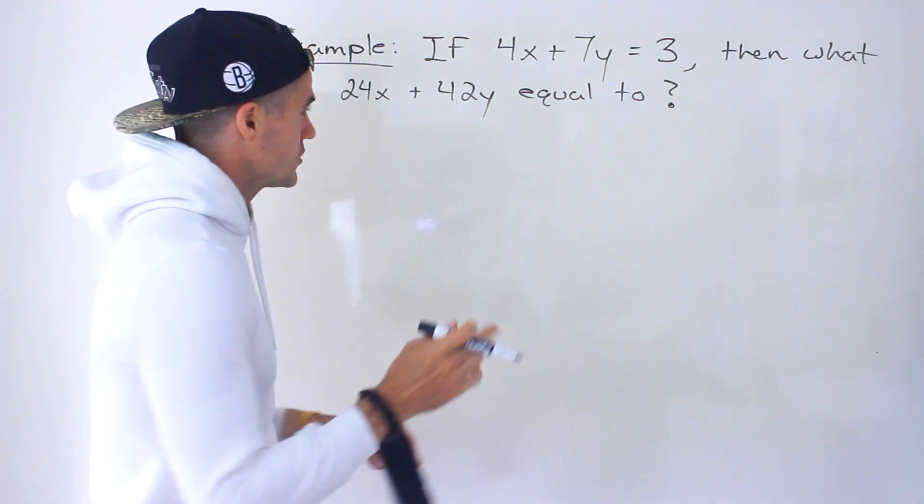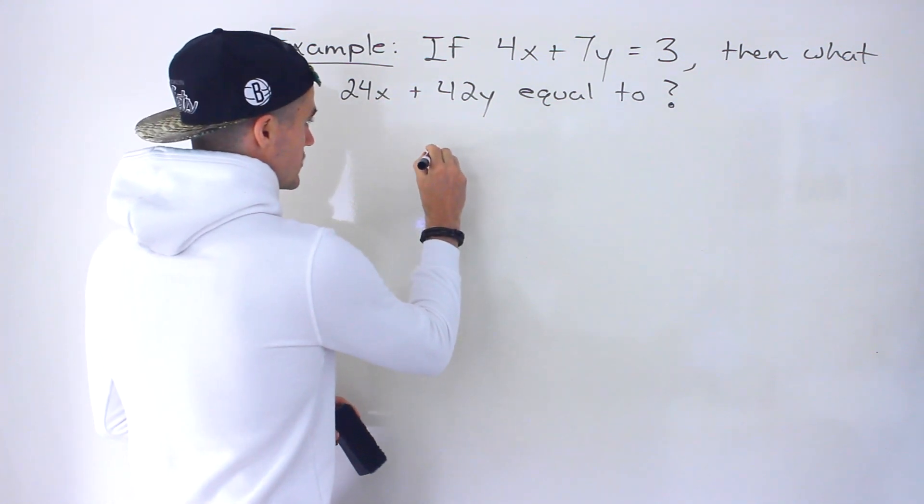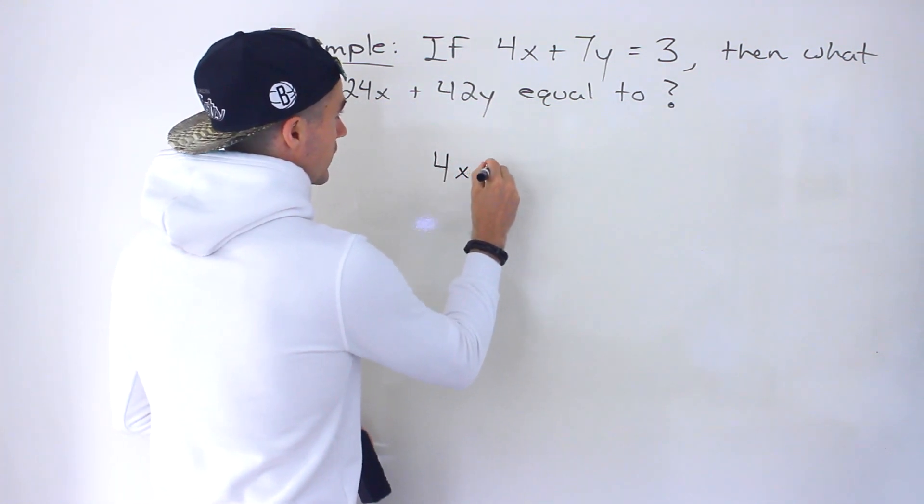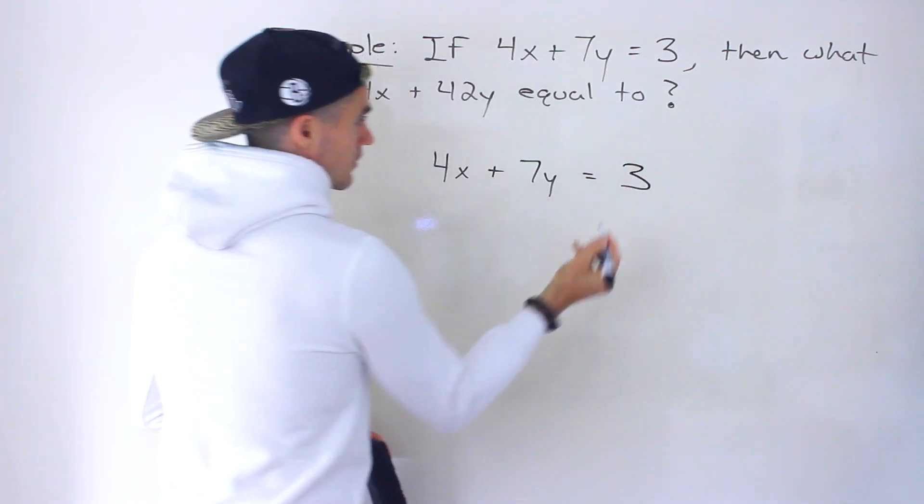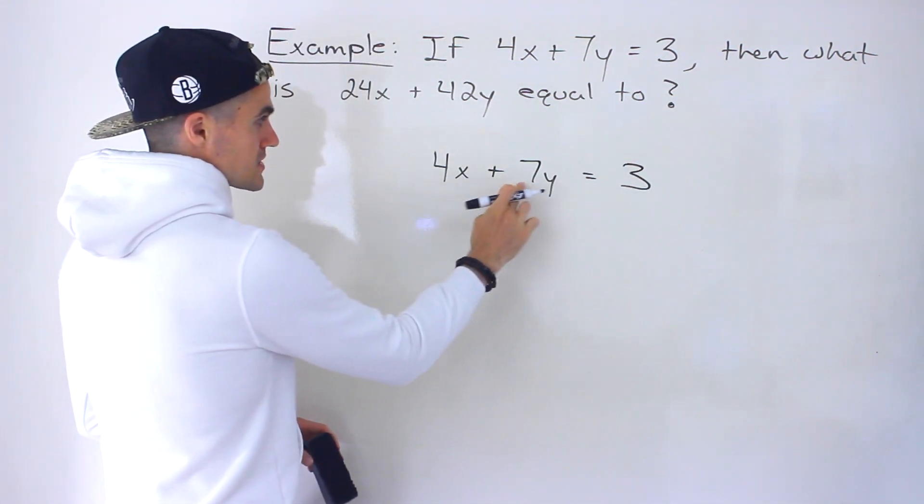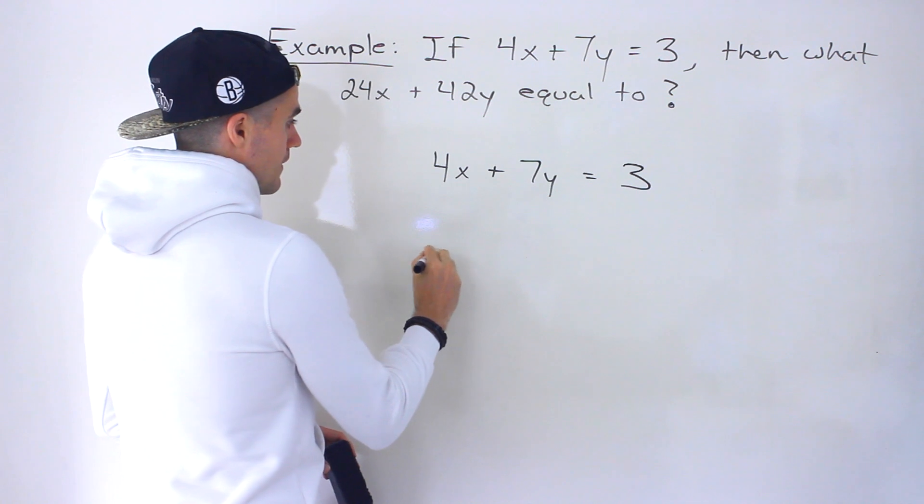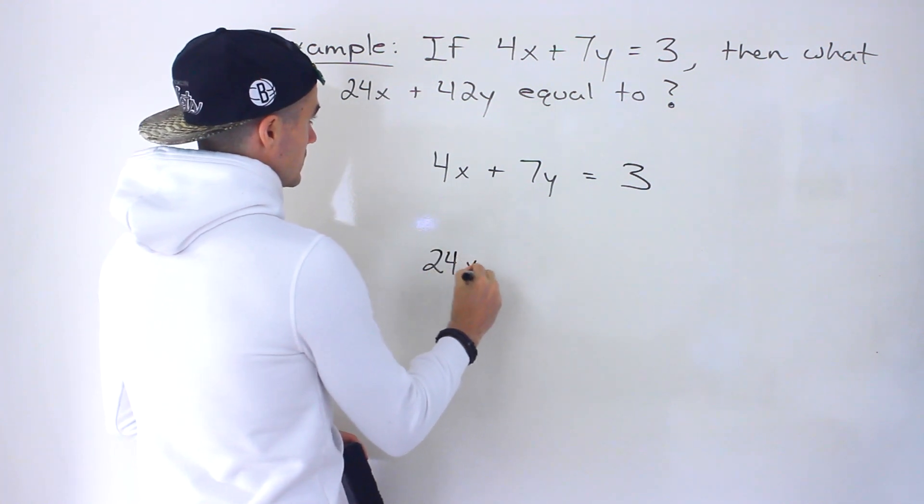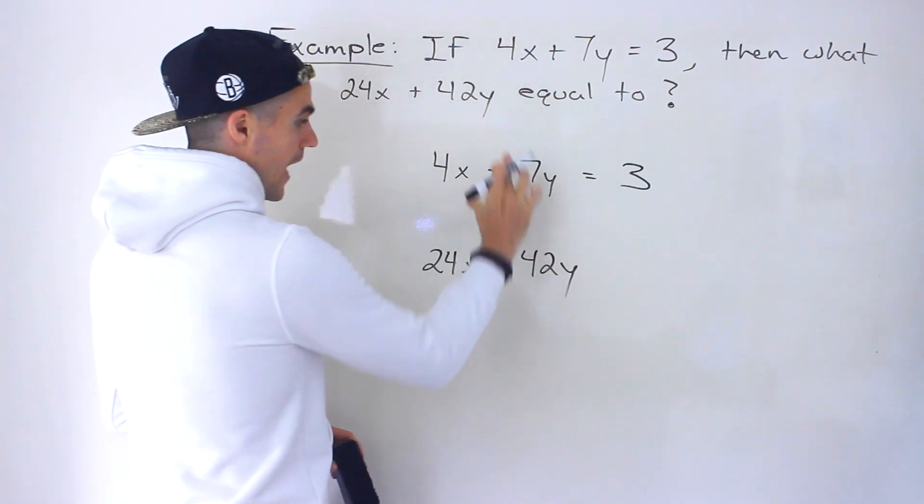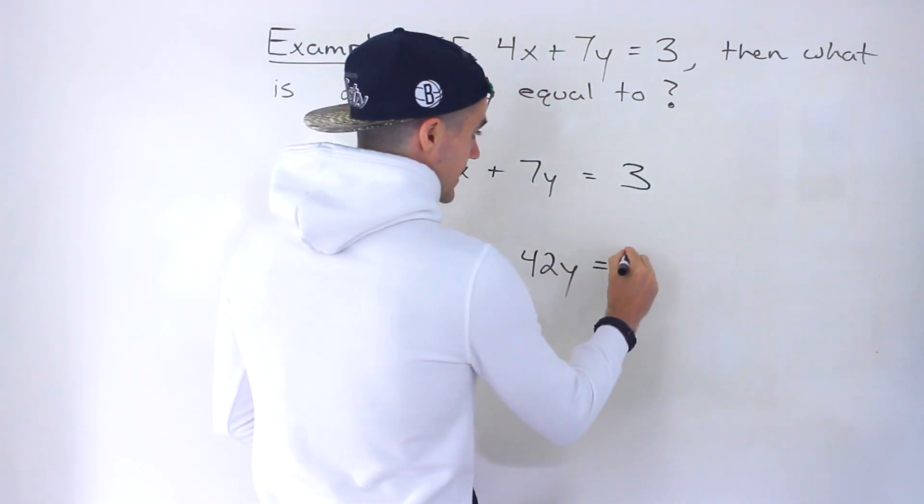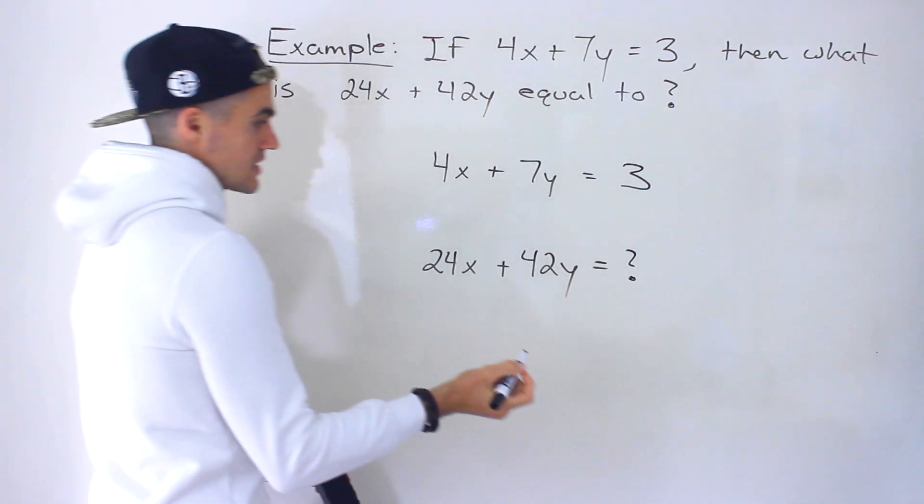So this is kind of a unique question. Let's write out what we're given. We're given this over here, right? So we're told 4x plus 7y is equal to 3. And then we're asked, given that, what is this expression going to equal?